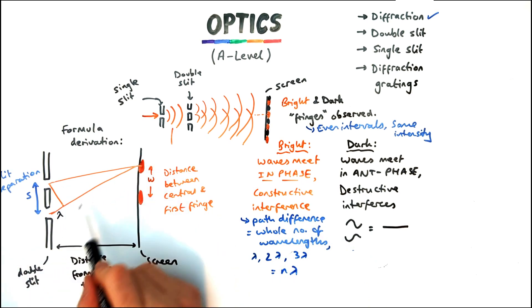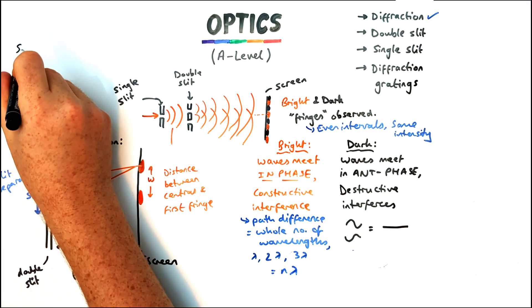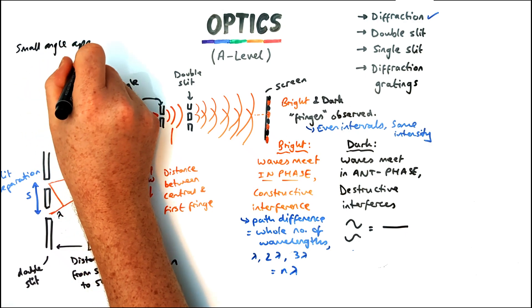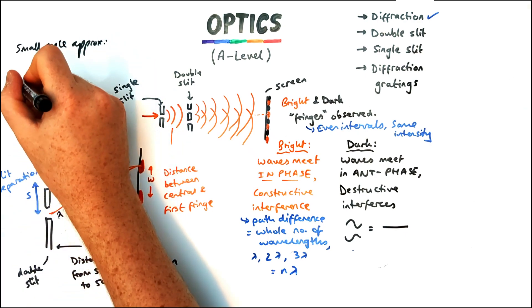Now before we have a look at these triangles we're going to use something called the small angle approximation which is these fringes are actually very close together. I know it doesn't look like that on the diagram. So the angles are going to be very small, less than 10 degrees. So we can use a couple of assumptions.